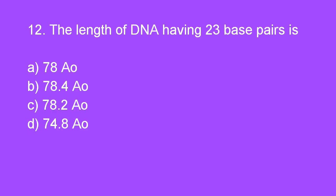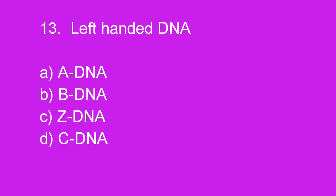Next question: The length of DNA having 23 base pairs is 74.8 angstroms. Option D is right.